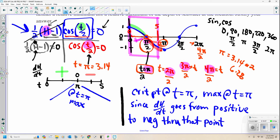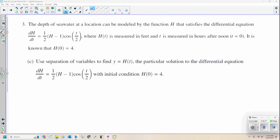There was so much to explain and not actually do in that problem that it was crazy. Use separation of variables. This is what I'm talking about. To find y equals h of t, the particular solution to the differential equation, dh dt equals 1 half h minus 1 cosine of t over 2. With the initial condition, h of 0 equals 4. All right, let's go.